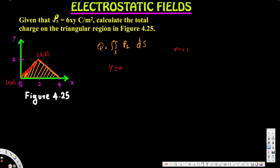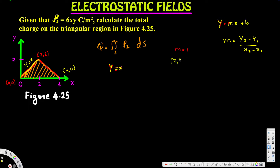For this second line, we have to find its equation. We can use the line formula y equals mx plus b. Since the first one was straightforward we directly put y equals x, but for this line we need to calculate. We can find the slope m using (y2 minus y1) divided by (x2 minus x1). The points are (0,0), (2,2), and (4,0). We are looking for the equation of this second line, so we pick up the points (2,2) and (4,0) to calculate the slope.